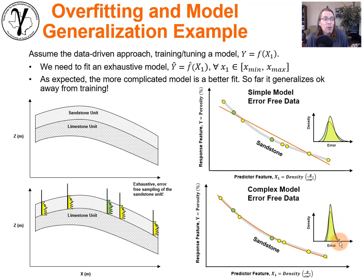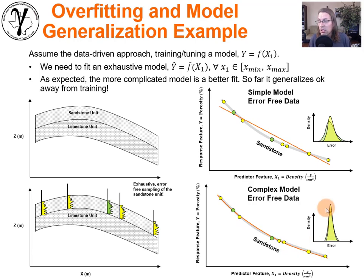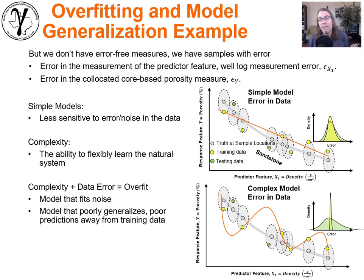So far the model generalizes really quite well away from the data. The truth is there and we're doing pretty good generalization — we can make pretty good predictions away from the training data, and that's what we're testing with the withheld testing data. But why do we fall into issues with overfit and loss of model generalization? This is the problem: we don't have error-free measures. We have samples with error.